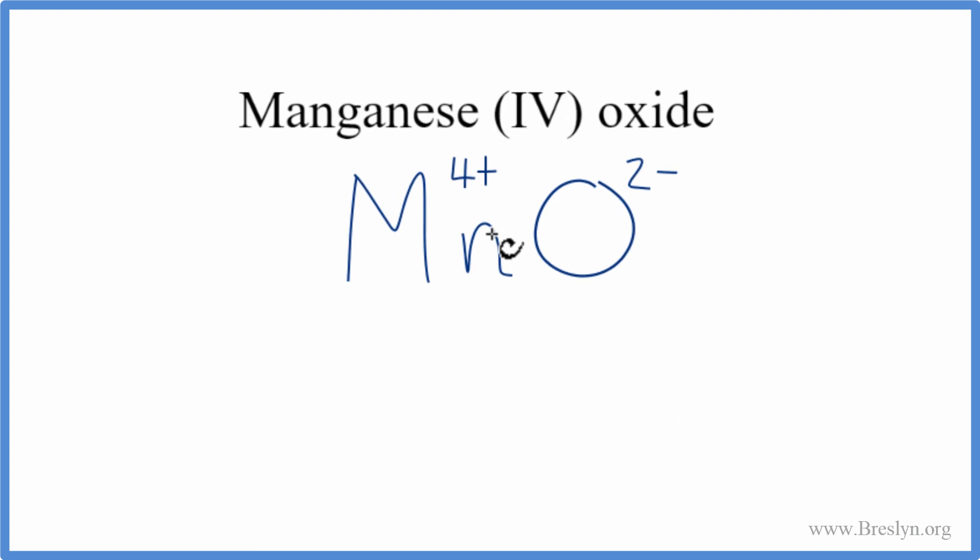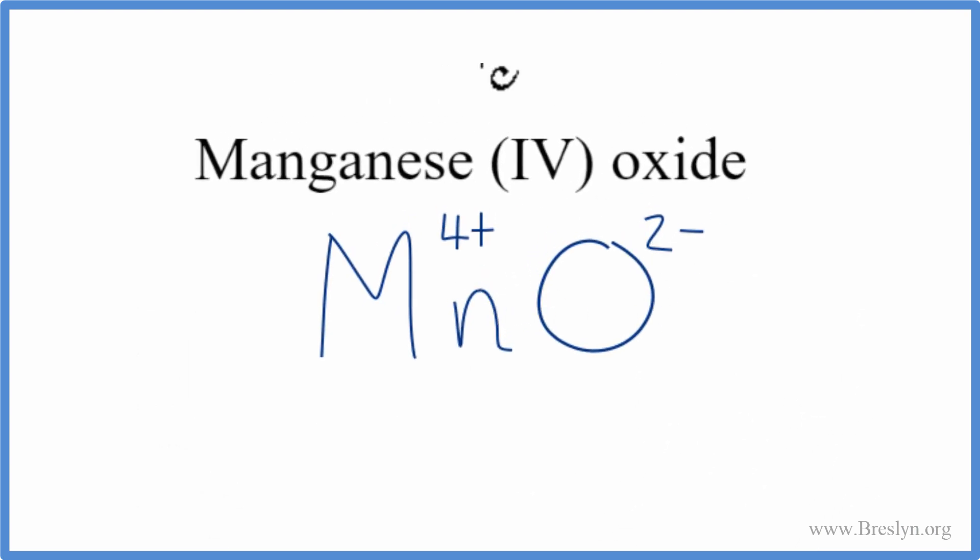These numbers need to add up to 0 to have a neutral compound. This is a neutral compound, so we want our net charge to be 0. To do that, we can change the subscripts. We'll use what's called the crisscross method, so we'll move the 2 down here and the 4 down here. We'll remove our charges to clean it up.